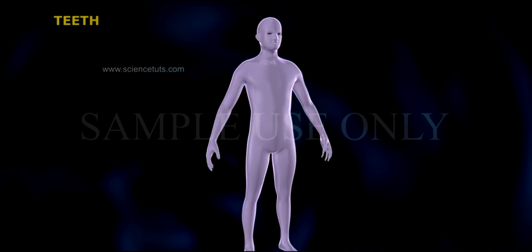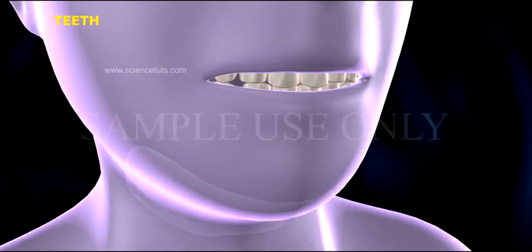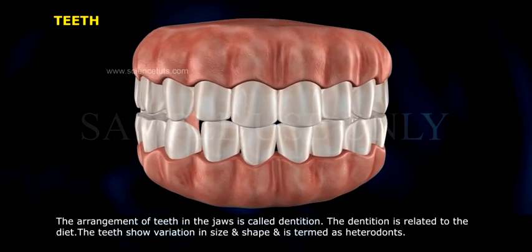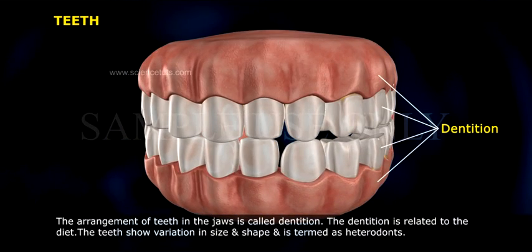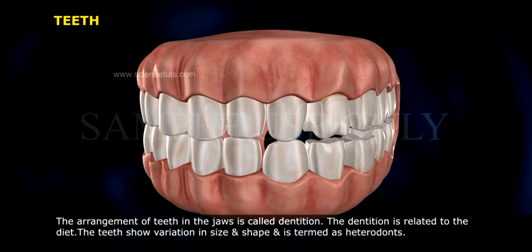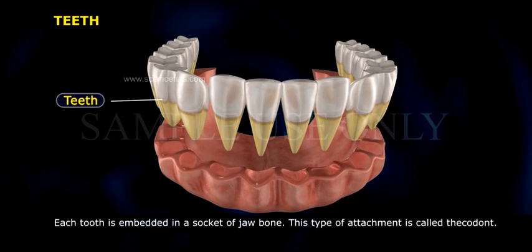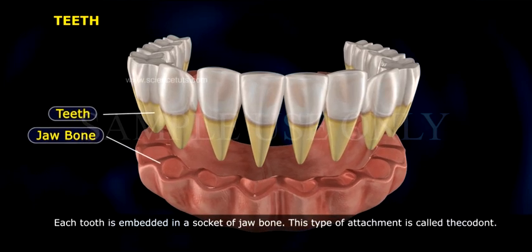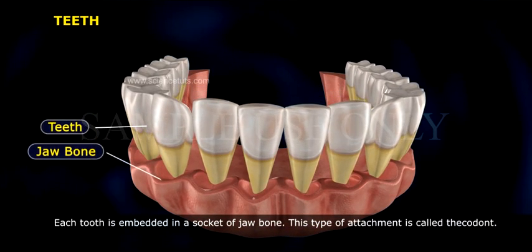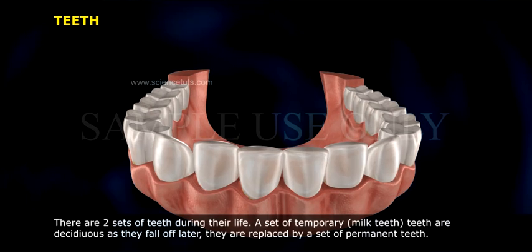The arrangement of teeth in the jaws is called dentition. The dentition is related to the diet. The teeth show variation in size and shape, and this is termed as heterodonts. Each tooth is embedded in a socket of the jawbone, and this type of attachment is called thecodont.